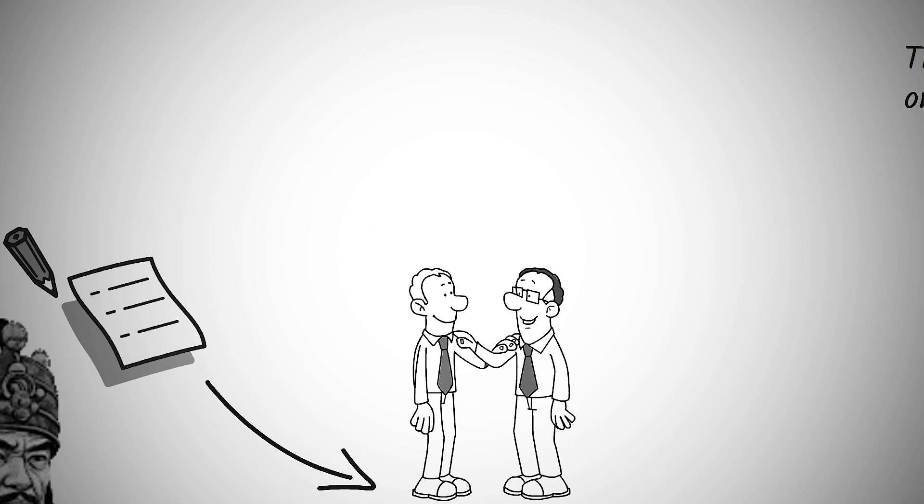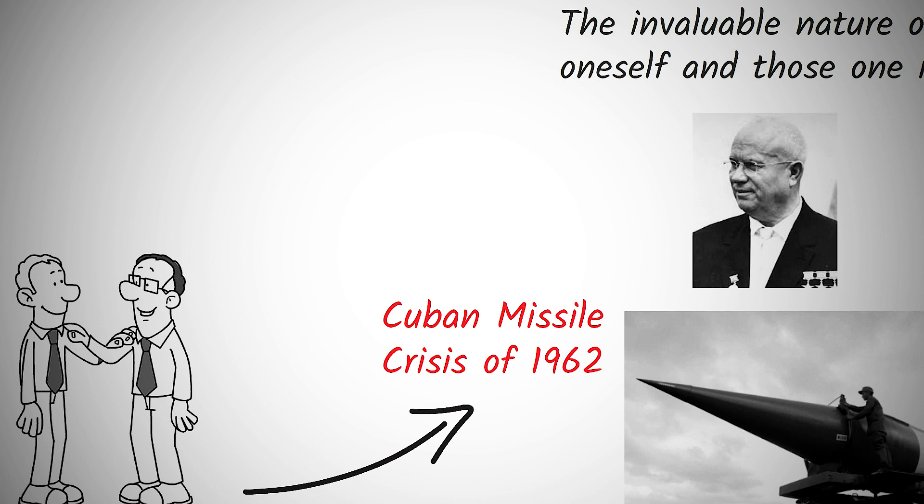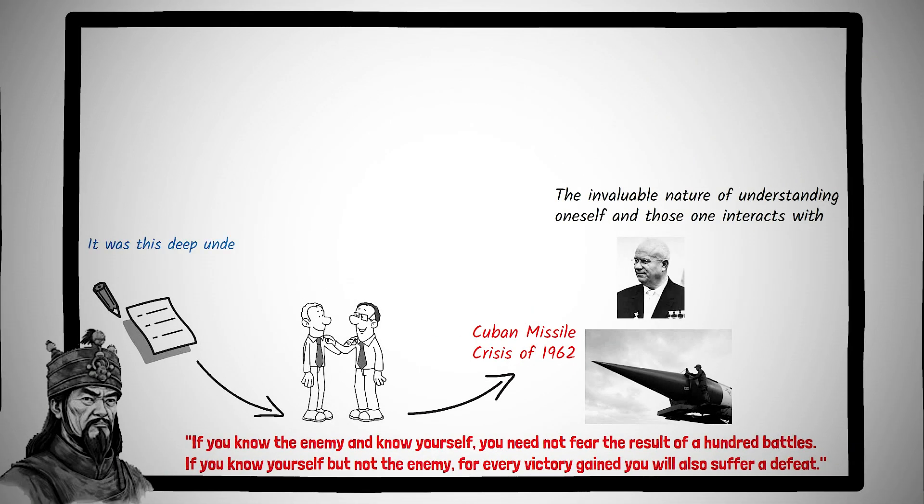History provides us a myriad of examples that underline this axiom. One such instance is the Cuban Missile Crisis of 1962. President John F. Kennedy and his advisors, faced with the dire threat of nuclear missiles in Cuba, had to not only understand their own strategic and geopolitical positions, but also deduce the motivations and constraints of Soviet Premier Nikita Khrushchev. It was this deep understanding of both self and the enemy that enabled a peaceful resolution to one of the most dangerous standoffs of the 20th century.